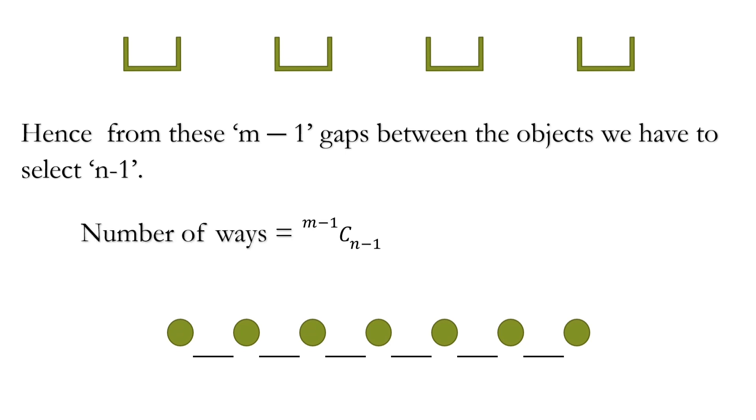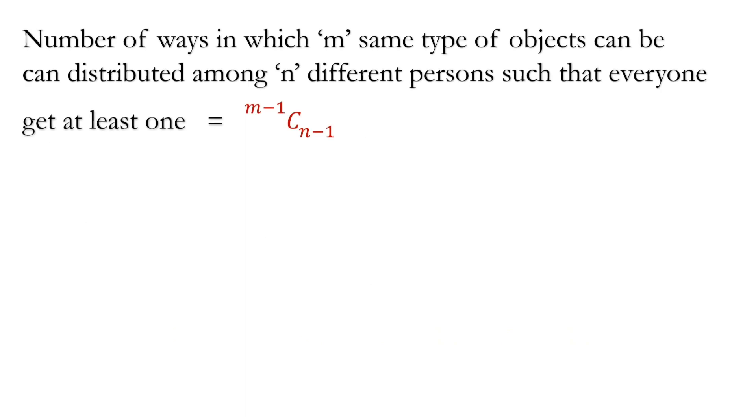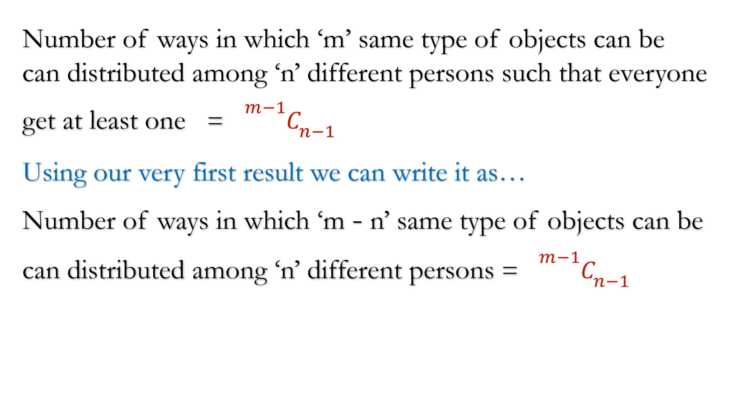But one problem is here that every one get at least 1. So it is a special kind of case. To convert this special kind of case into a general case we will use our result. We have to write this statement in a different way using our result. Number of ways in which m minus 1 same type of objects can be distributed among n different persons is equal to m minus 1 C n minus 1. Number of ways are same but the way of writing the statement is different.